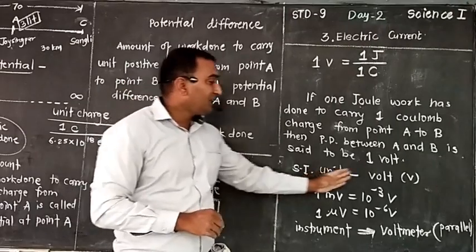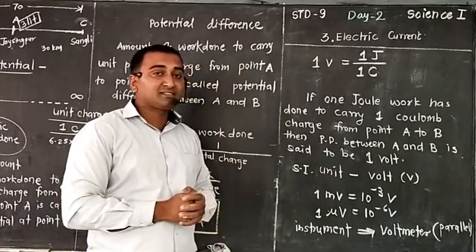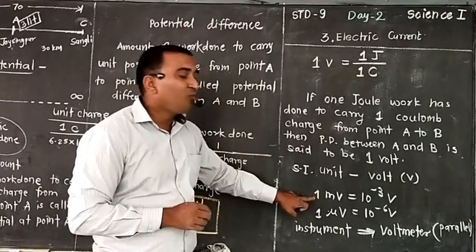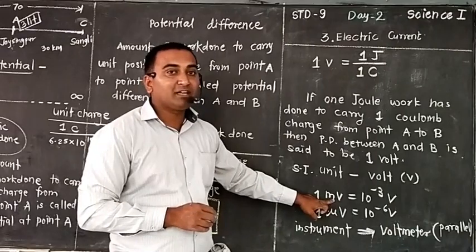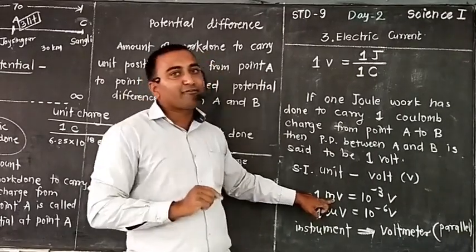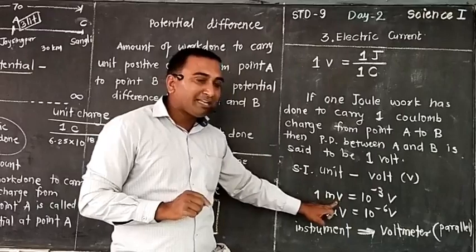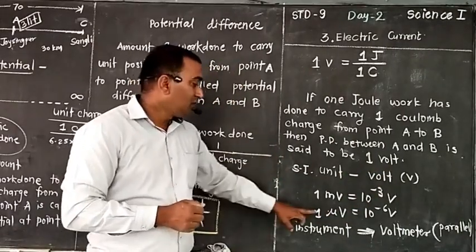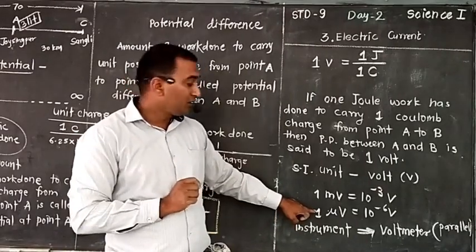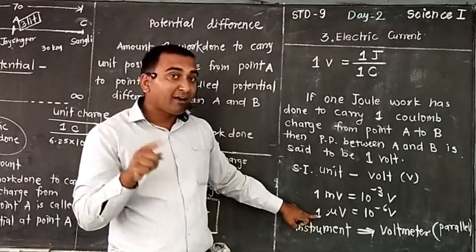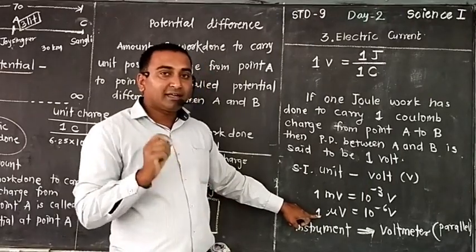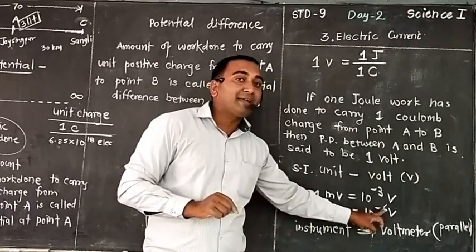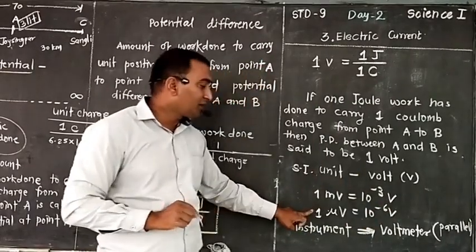The SI unit of potential difference is volt. We also have sub-units: 1 millivolt, which means 1 thousandth part of 1 volt, that is 10^-3 volt. Again, we have 1 microvolt, which is 1 thousandth part of 1 millivolt, that means 10^-3 divided by 1000, which is 10^-6 volt — that is 1 microvolt.